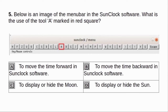The given image shows the menu bar in the SunClock software. What is the use of the tool A marked in the red square? A. To move the time forward in SunClock software. B. To move the time backward in SunClock software. C. To display or hide the Moon. D. To display or hide the Sun. Answer: A. To move the time forward in SunClock software.